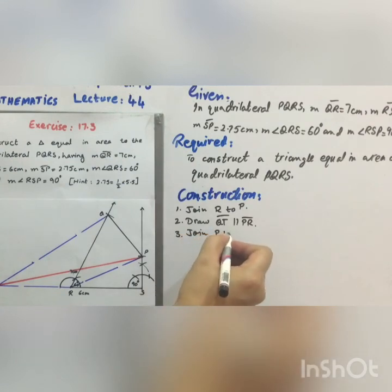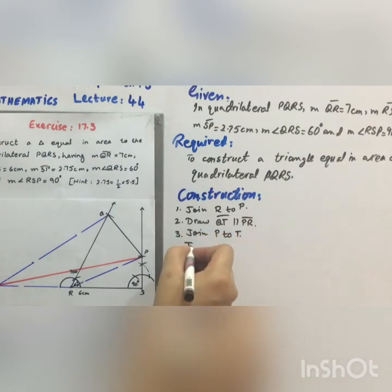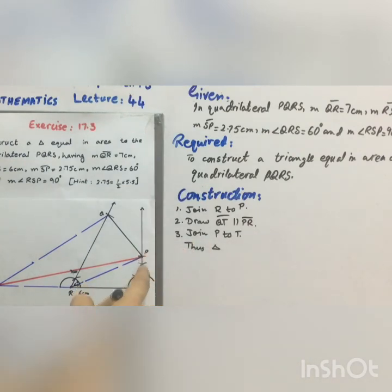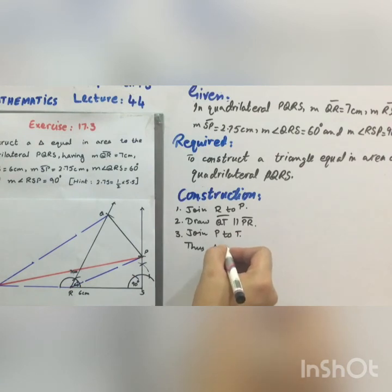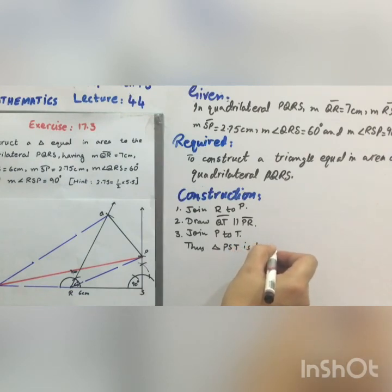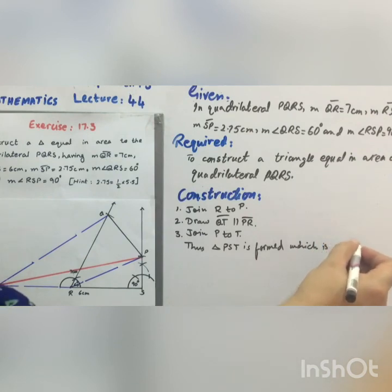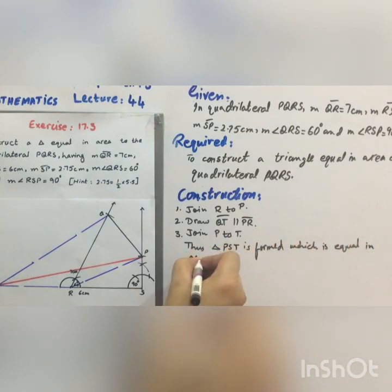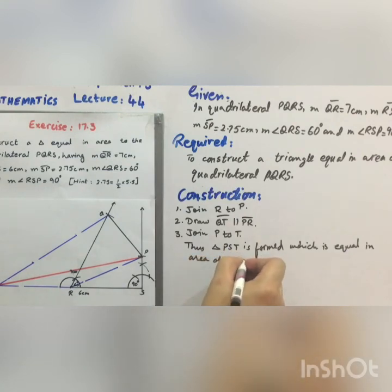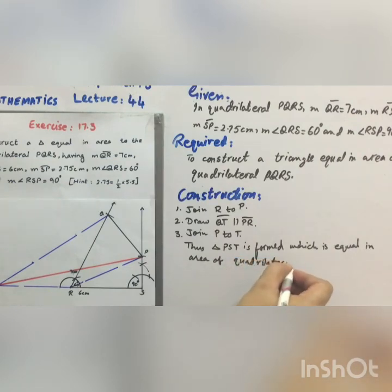Join P to T. Thus triangle PST is formed, which is equal in area of quadrilateral PQRS. Our question is completed. Allah Hafiz till tomorrow.